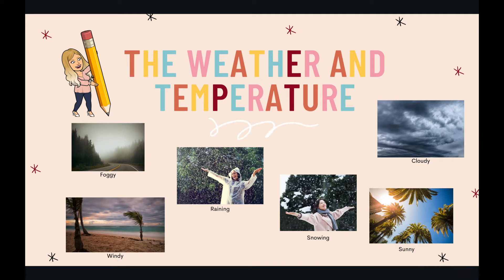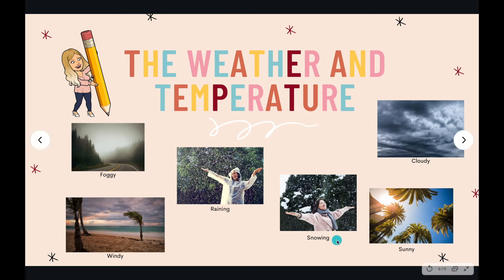'Windy' in Spanish is 'ventoso.' Next is 'snowing' — the lady is also enjoying the snow. 'Snowing' in Spanish is 'nevando,' not 'nieve.' Then we have 'cloudy' — pay attention, it has the word 'cloud' in it, so cloudy means 'nublado.' And finally 'sunny,' which means soleado. I hope you understand all the words — there are only six, not too many.